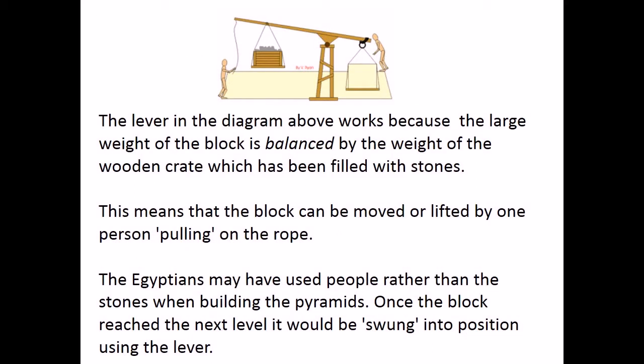The lever in the diagram above works because the large weight of the block is balanced by the weight of the wooden crate which has been filled with stones. This means that the block can be moved or lifted by one person pulling on the rope. The Egyptians may have used people rather than the stones when building the pyramids. Once the block reached the next level it would be swung into position using the lever.